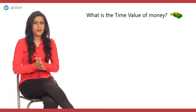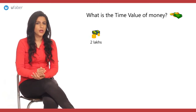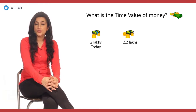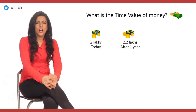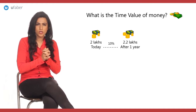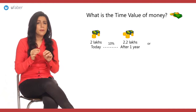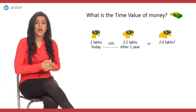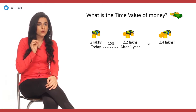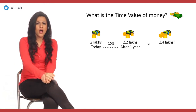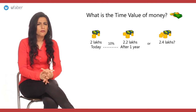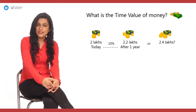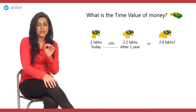Let's say a friend wants to borrow a sum of rupees 2 lakhs from you today. He offers to return 2.2 lakhs after a year — a return of 10%. You, however, expect 2.4 lakhs. Perhaps for him, 2.2 lakhs seems fair, but you feel 2.4 lakhs is what you should ideally get.